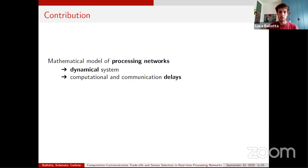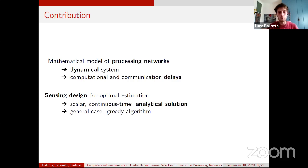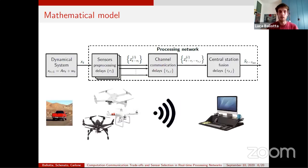In this contribution we propose a mathematical model of processing networks considering a dynamical system with computation and communication delays occurring in the network. We focus on the case study of sensing design for optimal estimation: first deriving an analytical solution for a simple case, then addressing the general case with a greedy selection algorithm. We have a dynamical system monitored by a set of sensors; each sensor can pre-process locally and transmit over a shared wireless channel to a central station.